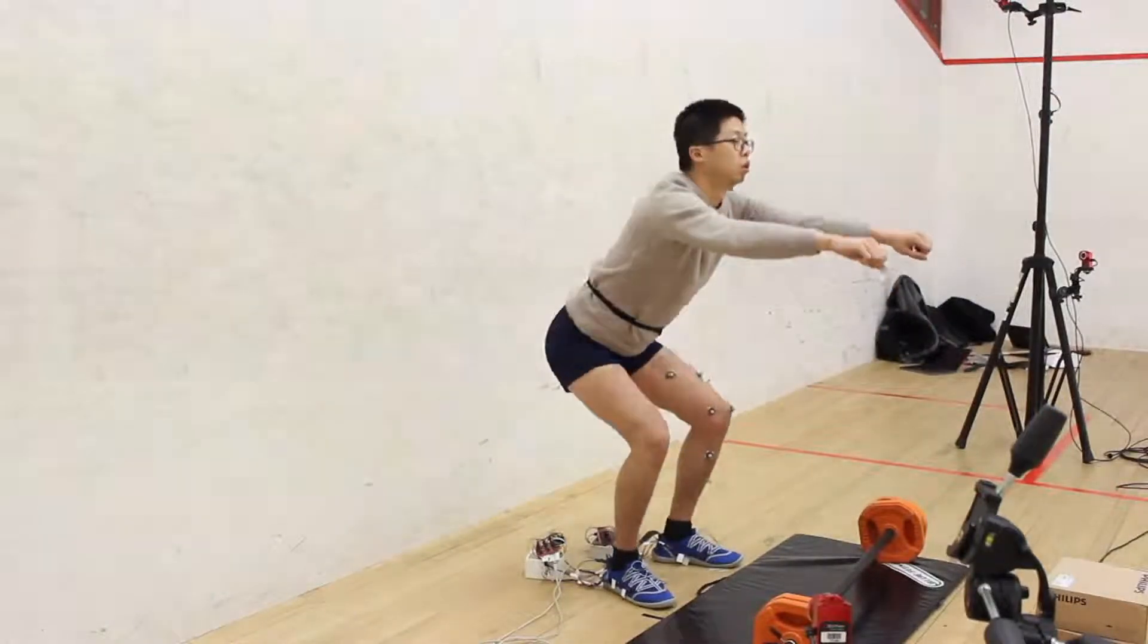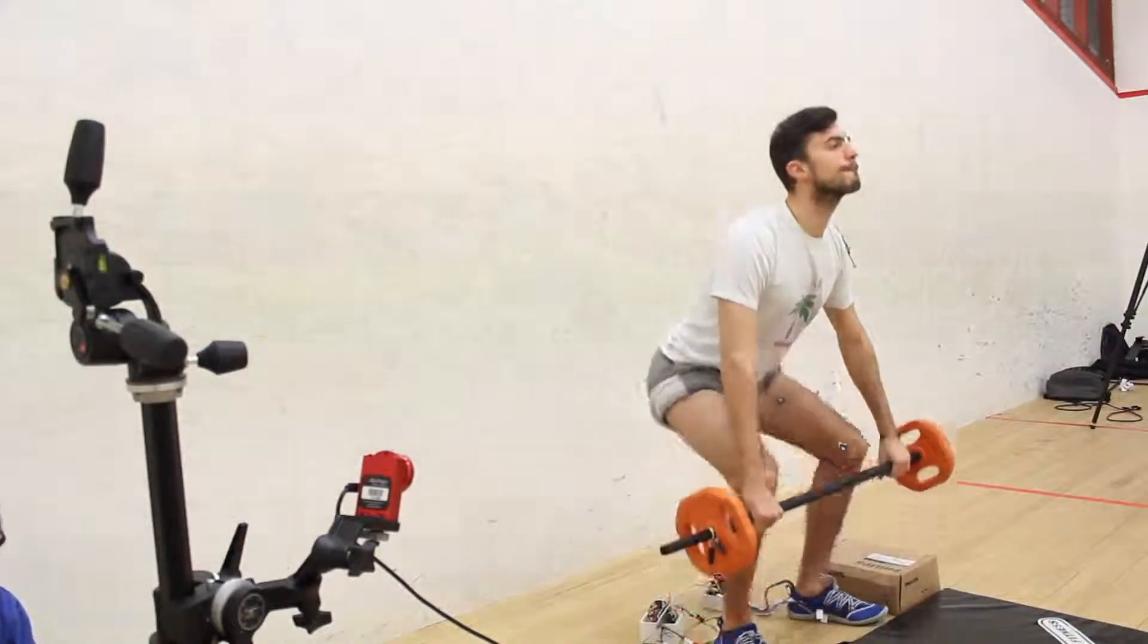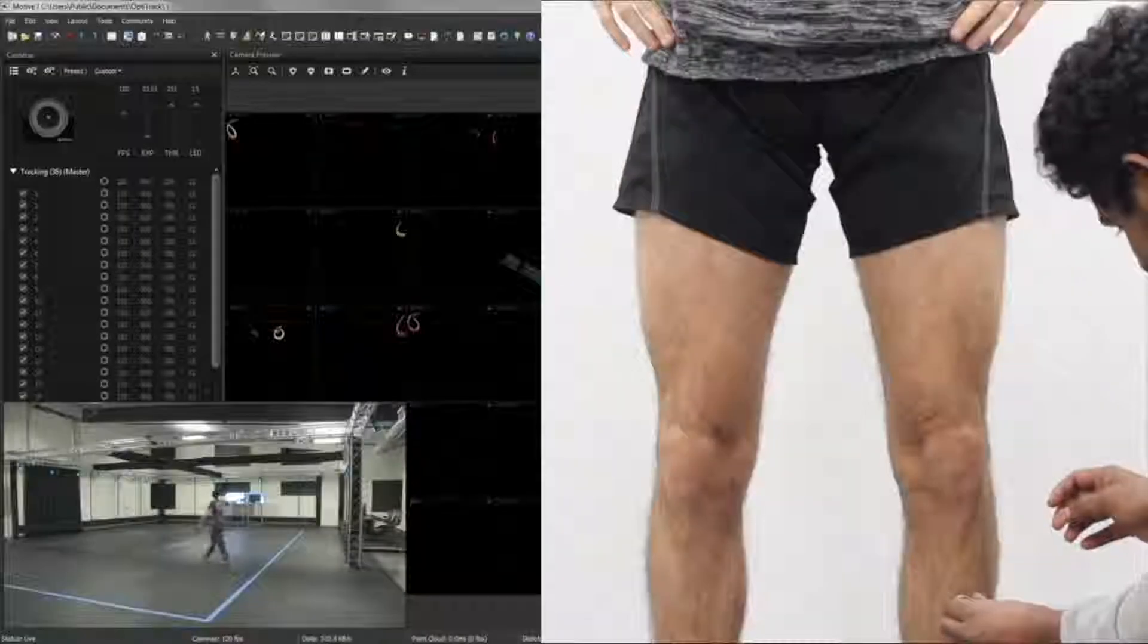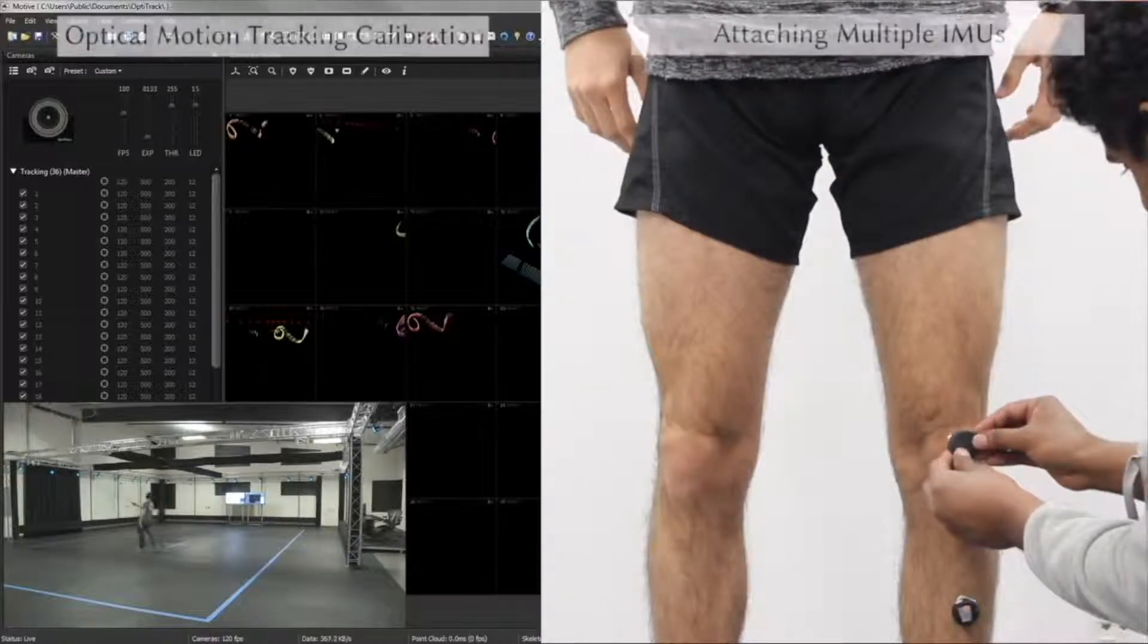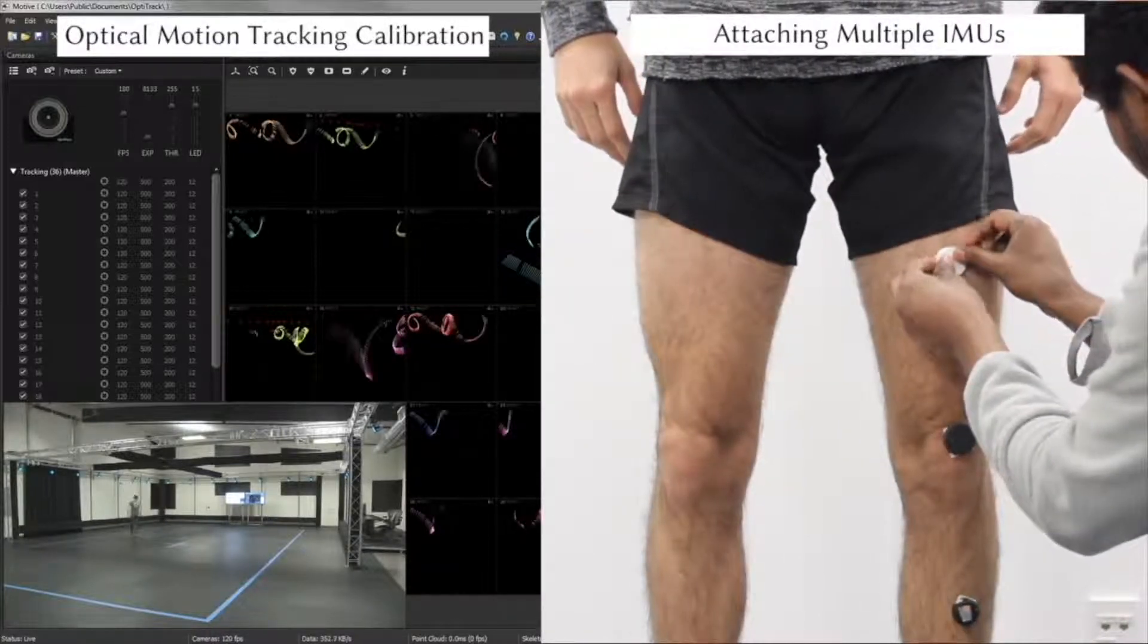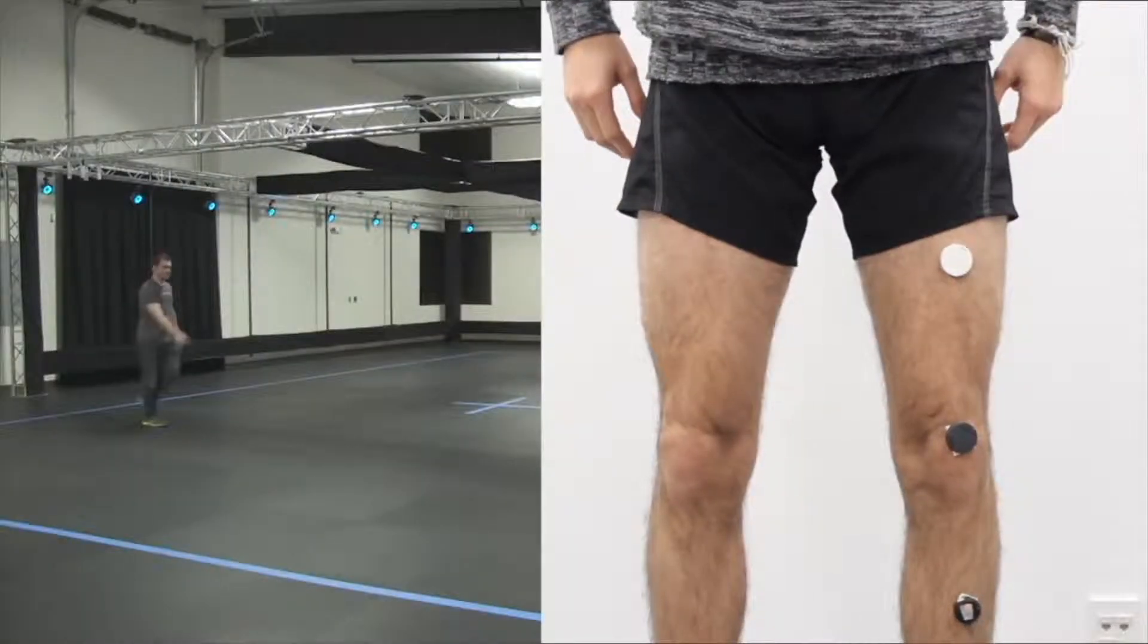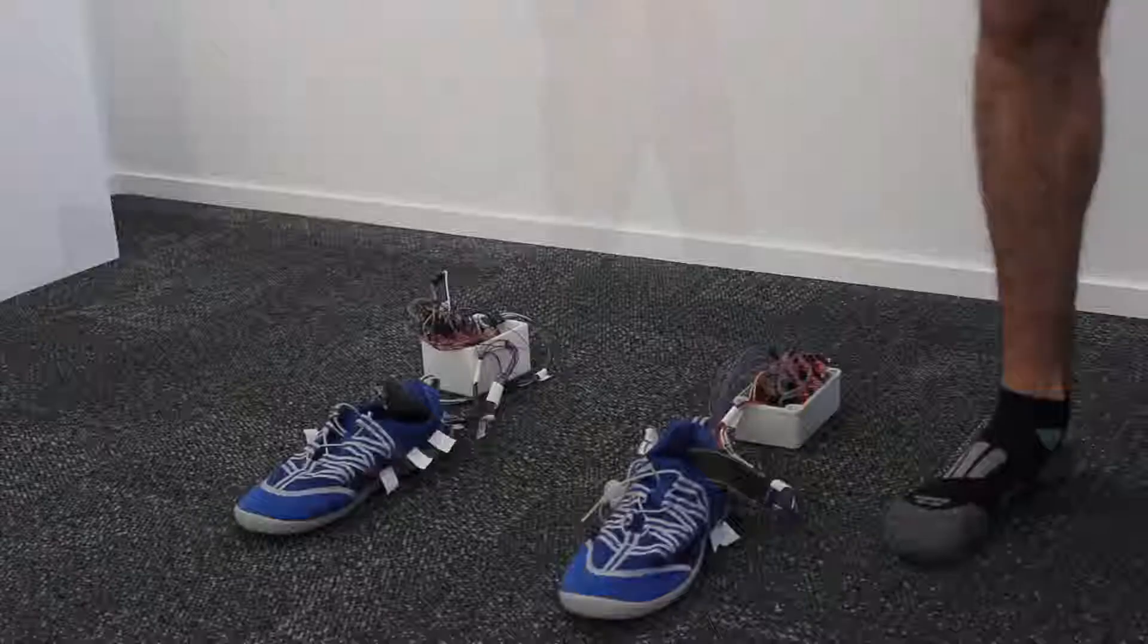The correct execution of exercises such as squats and deadlifts is essential to prevent bodily injuries. Existing solutions either rely on expensive motion tracking or multiple inertial measurement units based systems. These systems are considered impractical, requiring extensive setup such as individual calibrations.